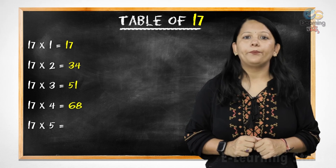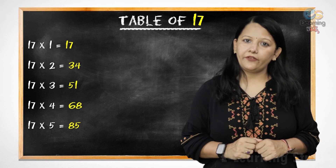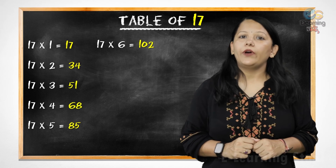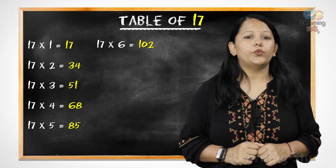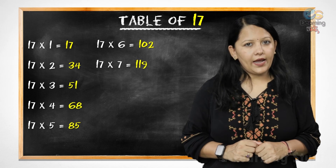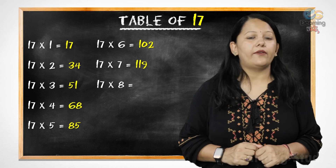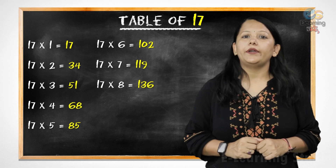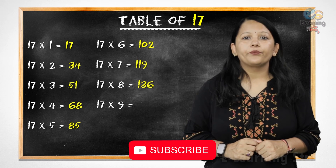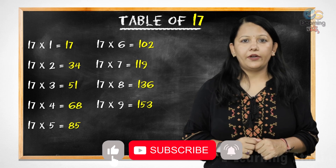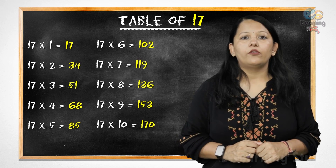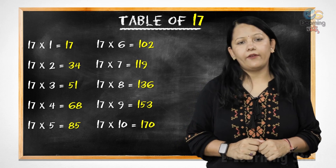17 fives are 85, 17 sixes are 102, 17 sevens are 119, 17 eights are 136, 17 nines are 153, 17 tens are 119.